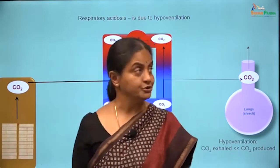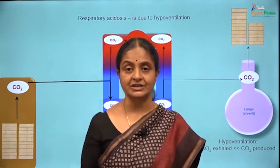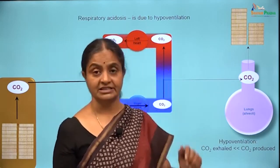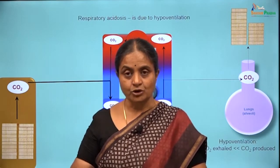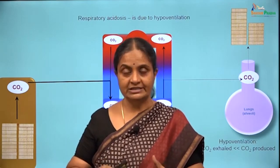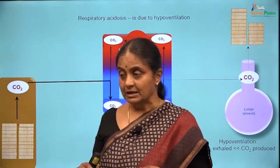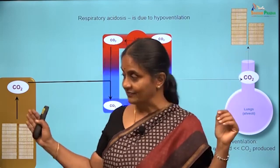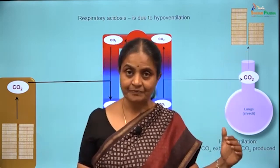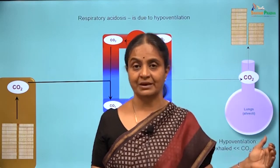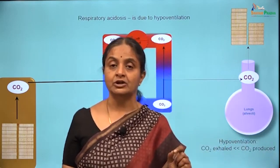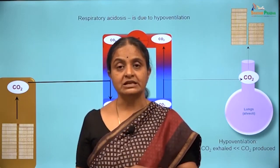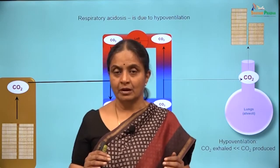If less carbon dioxide is released, the remainder builds up in arterial blood. If this is an ongoing increase in carbon dioxide levels — that is, if the lungs are putting out less carbon dioxide than what is formed and respiratory acidosis is developing — we would call it a non-steady state condition. This is an acute or sub-acute state.